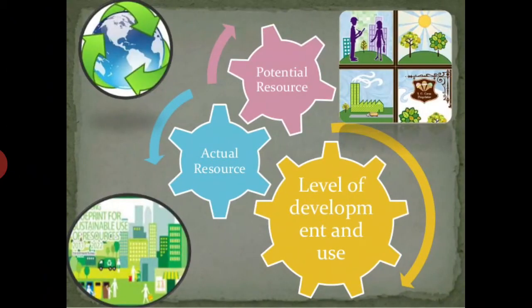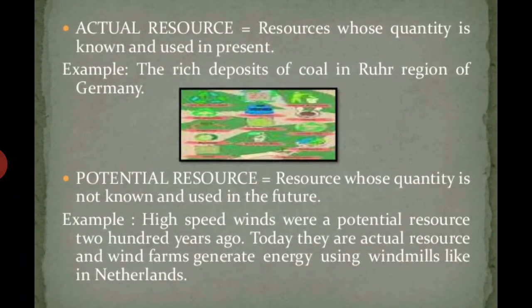On the basis of level of development, there are two types of resources: potential resources and actual resources. Actual resources are those whose quantity is known and used in the present — for example, the rich deposit of coal in the Ruhr region of Germany. Rajasthan is a region where wind energy and solar energy can be produced, but due to lack of technological development we are not using them at a high level, so Rajasthan is a potential resource in terms of wind and solar energy.